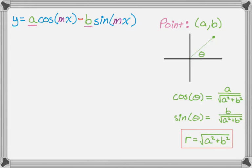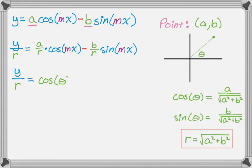So we have this, and now what we do is start working on this. I'm going to take the original equation and divide everything by r. So I get y over r equals a over r cosine of mx minus b over r times sine of mx. And a over r is actually just the cosine of theta, and b over r is the sine of theta. So it becomes cosine theta cosine mx minus sine of theta sine of mx. And if you look at that right-hand side there, that's actually just the cosine of a plus b.